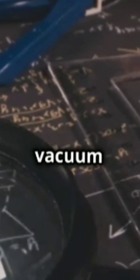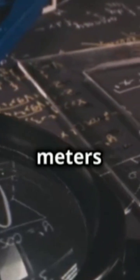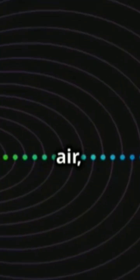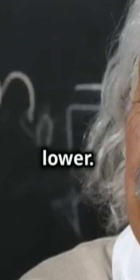The speed of light in vacuum is 299,792,458 meters per second. In air, it is slightly lower. In water, it is even lower.